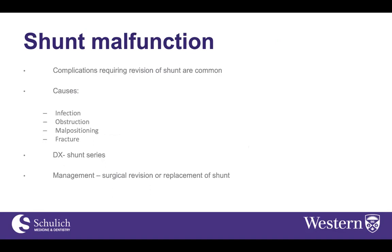Shunt malfunctions are important to understand, as in the adult world we are more likely to provide anesthesia for a shunt revision than a primary insertion. Shunts can malfunction due to infection, obstruction over time, malposition, or fracture. The main diagnostic modality is the shunt series. Surgical management involves either revising or replacing the shunt — for infected shunts, the entire catheter must be removed and replaced.